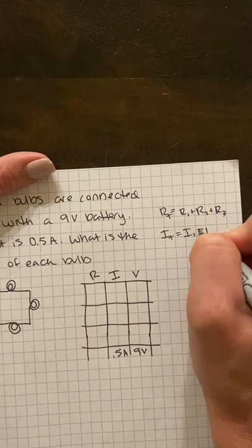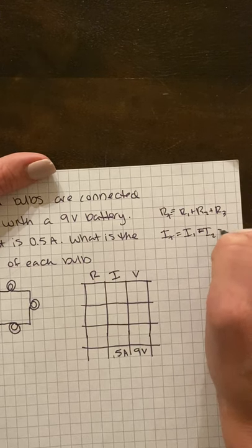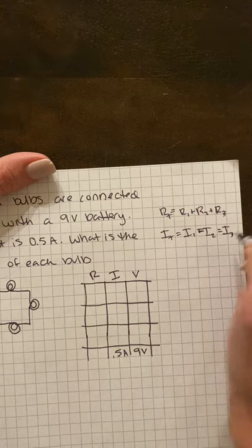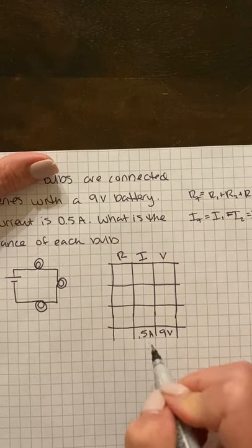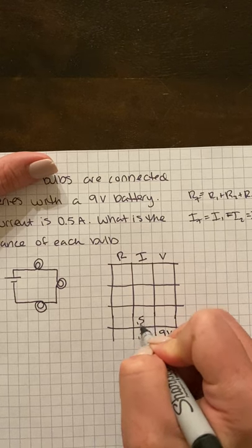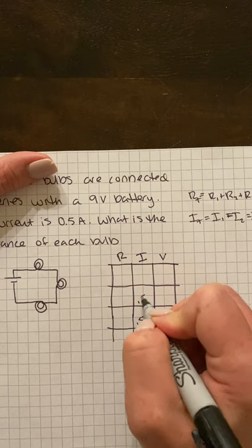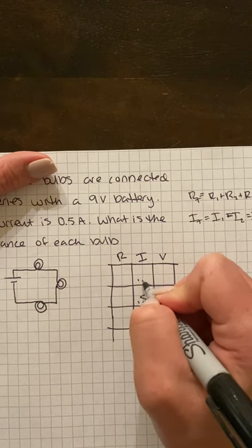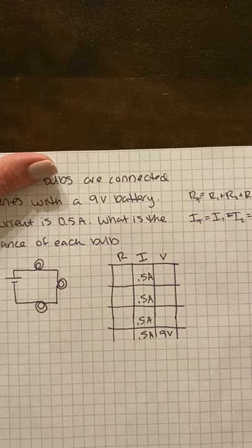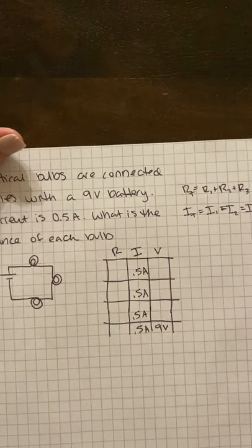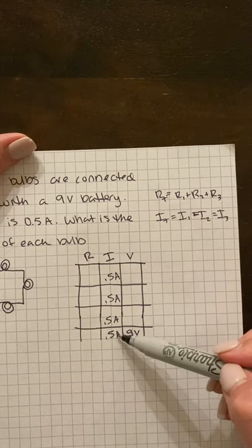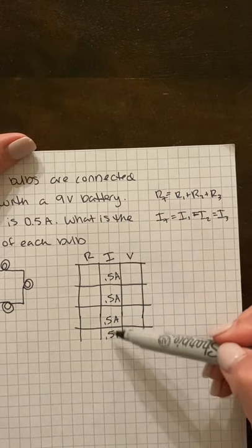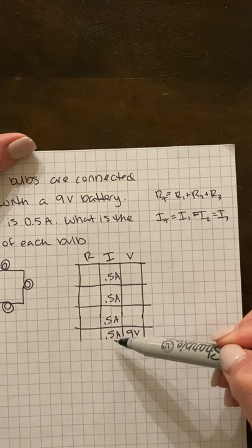So what this looks like—that they're equal to each other—in my chart is if I'm given my total, I also have my current (excuse me) for all of the other parts of my circuit in series. In parallel, the rules are going to be a little bit different. So if I've been given my total, I can fill out this whole column for my current in series.